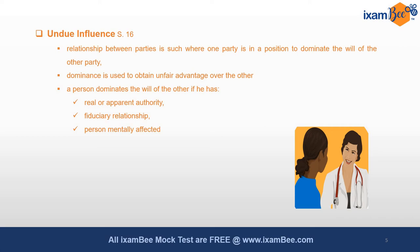If there is a fiduciary relationship, such as between a doctor and a patient or a lawyer and a client, then one party is in a dominant position. Also, a person who is mentally affected may be dominated. The basic difference between coercion and undue influence is that in coercion, a party uses threat to commit an offence so that the other party enters into the contract, whereas in undue influence it is a moral influence used by a person in a dominant position to obtain the assent of the other party.